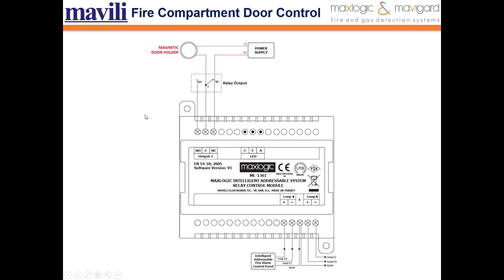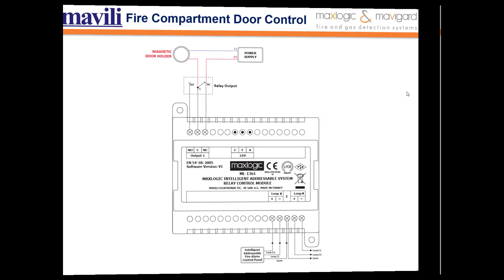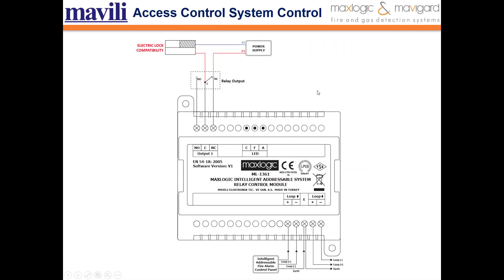For fire compartment door control, the relay control module can be used to send signals to magnetic door holders. In case of fire, you can send a signal to the magnetic door holders to open or close them. For access control, relay control modules can be used to open and release turnstiles in card pass systems placed at building entrances in case of fire.